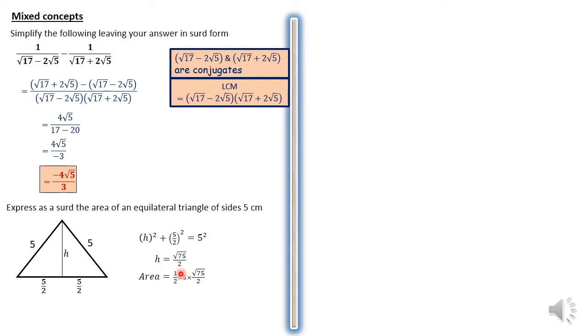And simplifying for H, we'd have H is root 75 over 2. That therefore tells us that the area would be half base times perpendicular height, which is half times the base, which is 5, times perpendicular height, which is root 75 over 2. And that gives us 5 root 75 over 4.